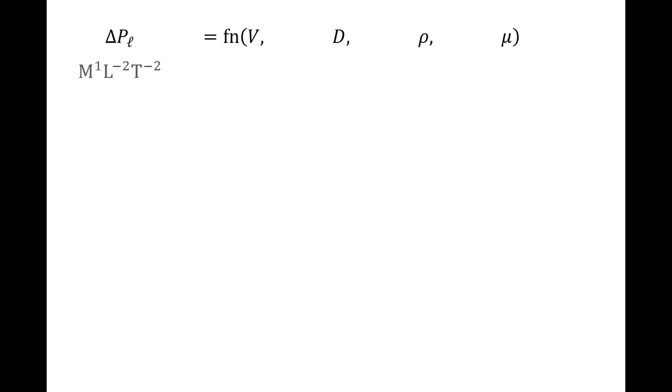In step 2, we list the basic dimensions of each variable in the FLT or MLT dimensional system, and here we will arbitrarily select the MLT system. In the MLT system, delta PL has dimensions of mass, length to the negative 2, time to the negative 2. Speed V has dimensions of length per time. Diameter d has dimensions of length. Density rho has dimensions of mass per length cubed. And absolute viscosity mu has dimensions of mass per length per time.